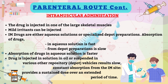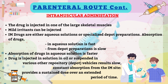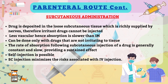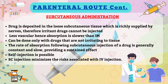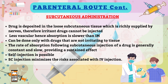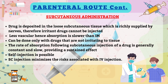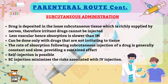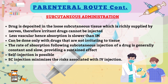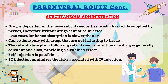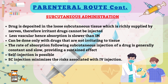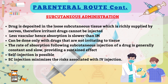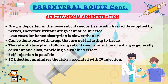Slow, constant absorption from the intramuscular site results when the drug is injected in oil solution or suspended in repository vehicles. As the vehicle diffuses out of the muscle, the drug precipitates at the site of injection and dissolves slowly, providing a sustained dose over an extended period. In subcutaneous administration, the drug is deposited in the loose subcutaneous tissue, which is richly supplied by nerves — therefore, irritant drugs cannot be injected this way. It is less vascular and absorption is slower than the intramuscular route. Self-injection is possible, and subcutaneous injection minimizes risks associated with intravascular injection.